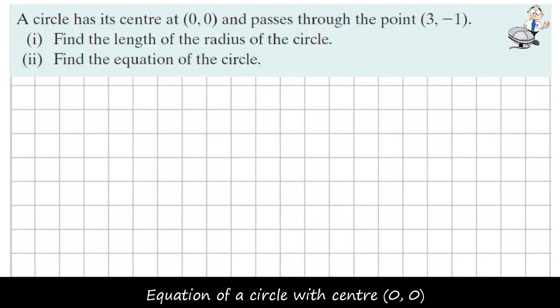A circle has its center at 0, 0 and passes through the point 3, negative 1. Find the length and radius of the circle and the equation of the circle.